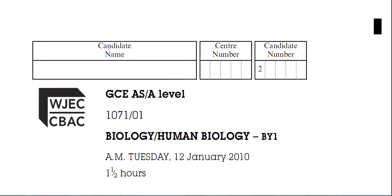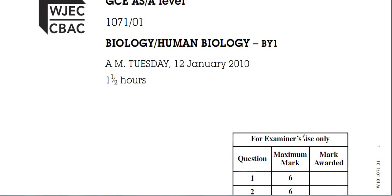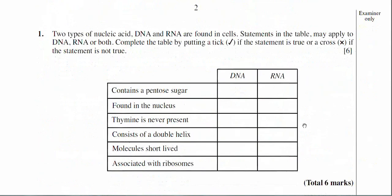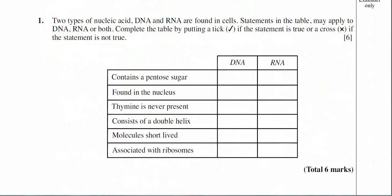Okay, we're up to the January 2010 paper for the BY-1 and we're looking at question number one now which is on nucleic acids. The question states there are two types of nucleic acid, DNA and RNA, and they're found in cells. Statements in the table may apply to DNA, RNA or both. Complete the table by putting a tick if the statement is true or a cross if the statement is not true. Okay, so the whole question there is worth six marks.